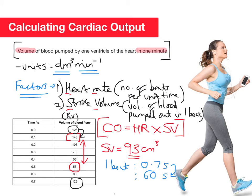Calculating 1 ÷ 0.7 on the calculator gives 1.4285714..., which I'll round to 1.429. Then multiplying by 60: 1.429 × 60 = 85.74 beats per minute. That's our heart rate (HR).